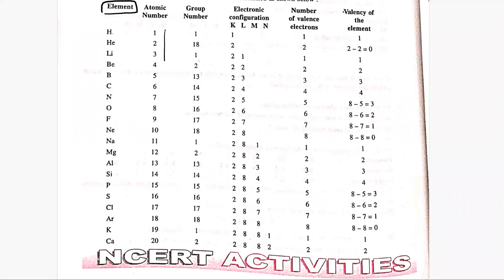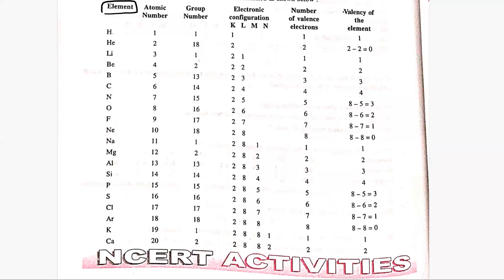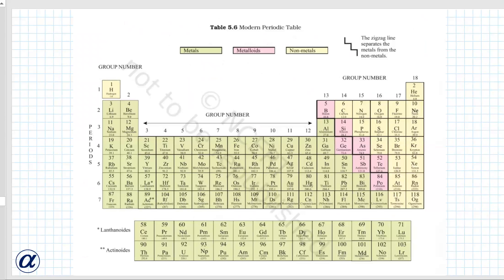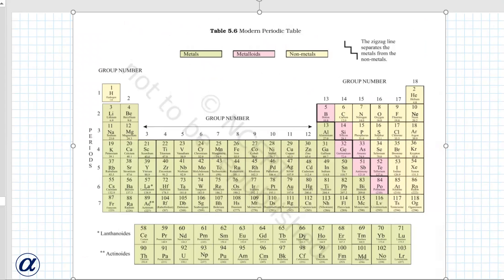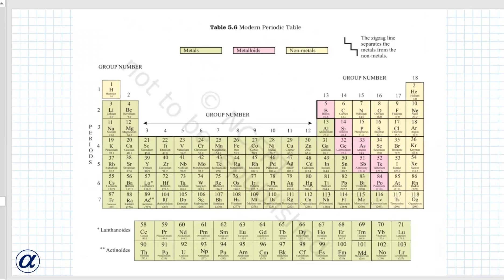Their atomic numbers are written from 1 to 20. The group number to which they belong in the periodic table — groups vary from 1 to 18. Hydrogen is from group 1, helium is from group 18, lithium from group 1, beryllium from group 2.